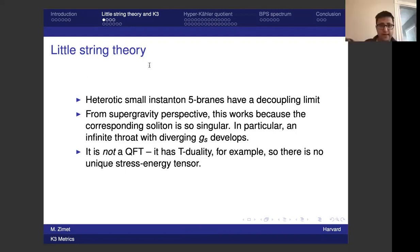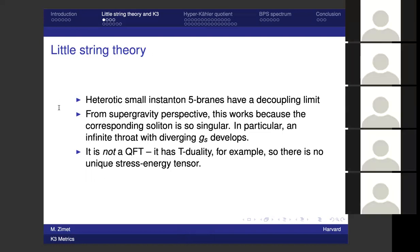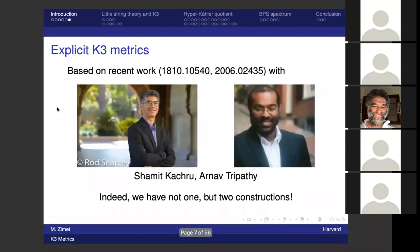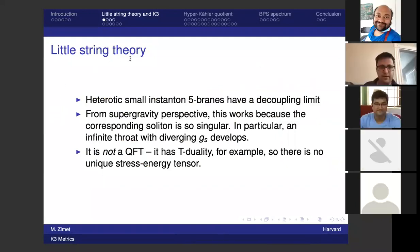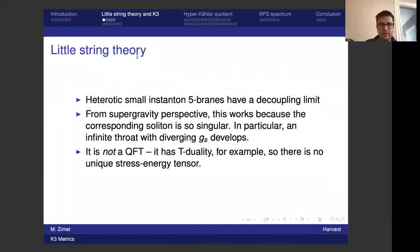Let me begin with a discussion of the first of the two constructions. I'll call this the Coulomb branch construction, for reasons that will become clear. The physical context for this construction is what's called little string theory. The starting point physically is what's called a heterotic small instanton five-brane. Let's take SO(32) for concreteness — heterotic string theory has an SO(32) gauge group in 10 dimensions.